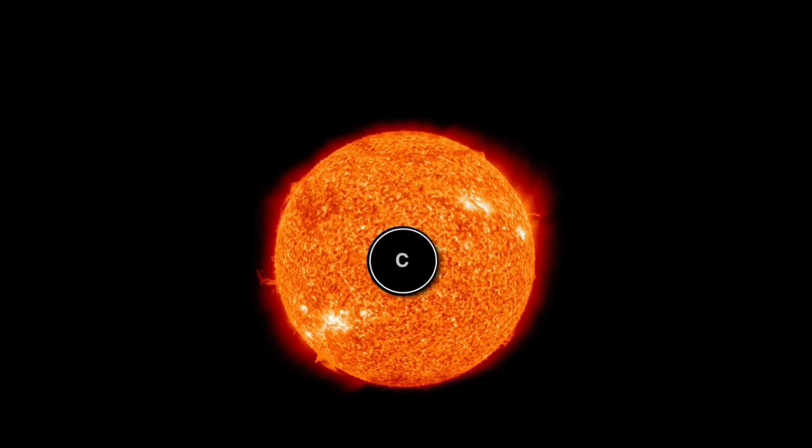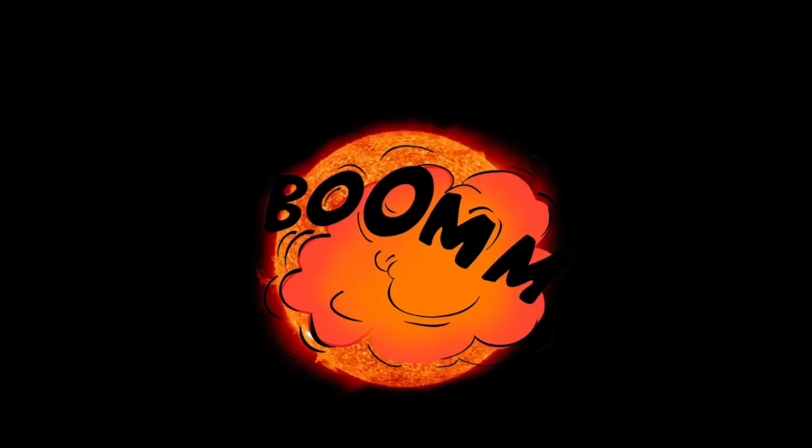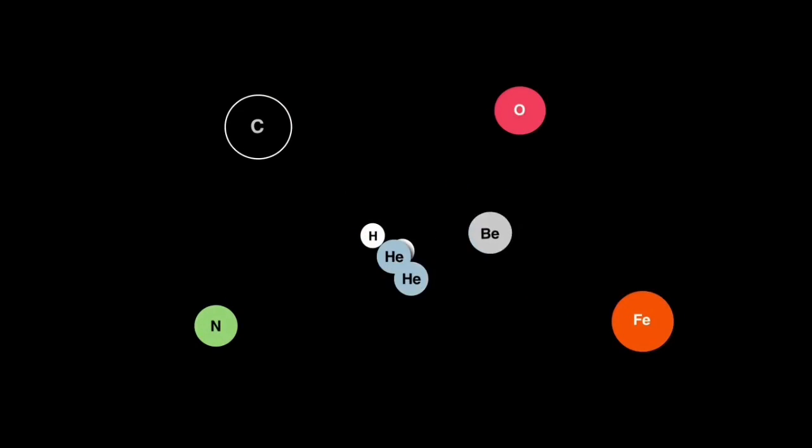Now we've made carbon. This process continues to make other elements such as nitrogen and oxygen and finally iron, which is incredibly heavy and will indicate the end of a star's life cycle. Some large stars will explode in huge explosions called supernovas, and when they do this they scatter the elements they've made across the universe.